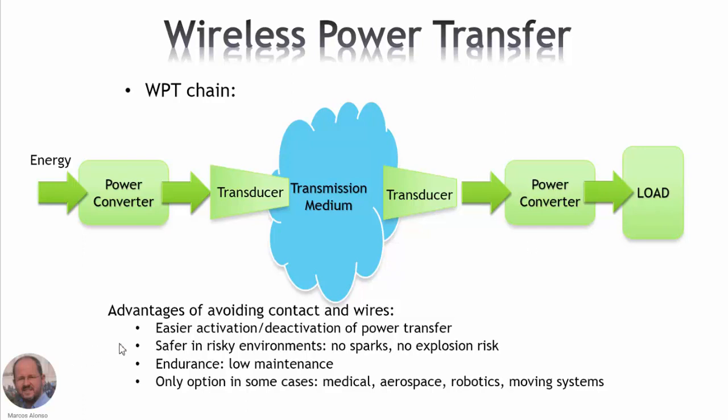Here we can see the advantages of avoiding contact and wires in many applications. We can have easier activation and deactivation of the power transfer — for example, when charging our mobile phone, we just put our phone on a charging pad and it gets recharged. It is also safer in risky environments because there are no sparks, so there is no explosion risk. These systems are also very robust because without connectors there is no deterioration from connecting and disconnecting, so maintenance is lower. They are also the only option in many cases, for example in medical applications, aerospace applications, robotics, and moving systems.